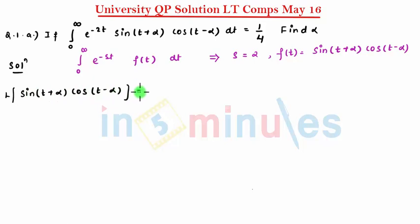So let's find first Laplace of sin(t plus alpha) cos(t minus alpha), which we can say as 1 by 2 Laplace of sin(a plus b). That comes to be t plus alpha plus t minus alpha plus sin(a minus b). So t plus alpha and then further is minus t plus alpha.